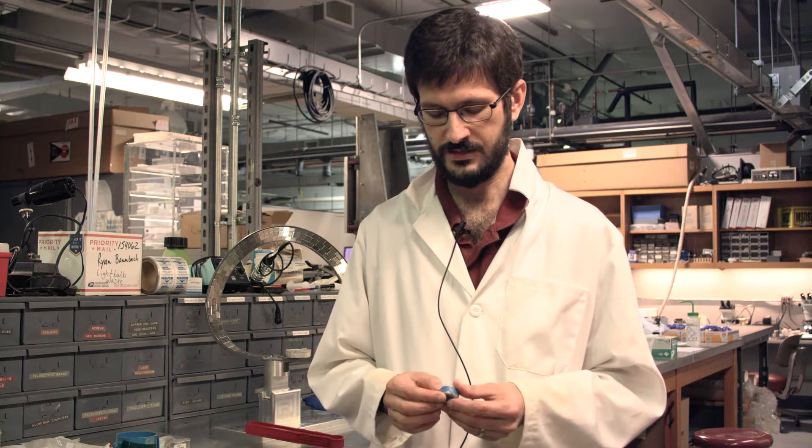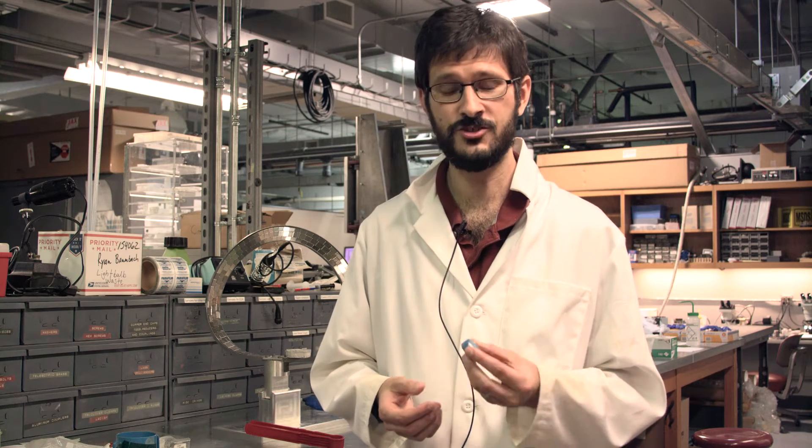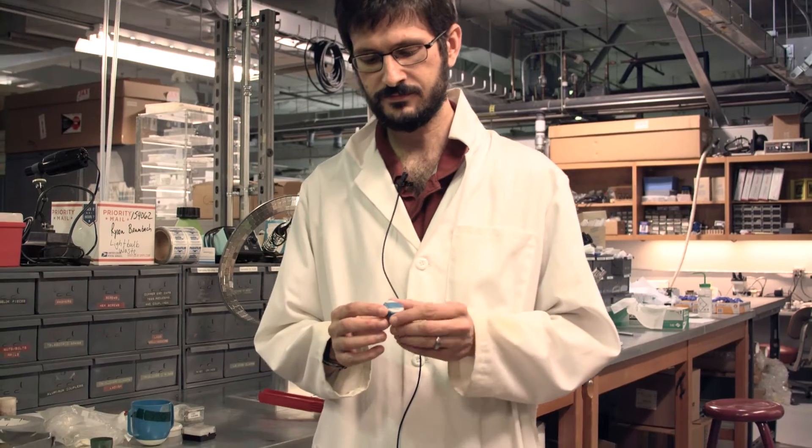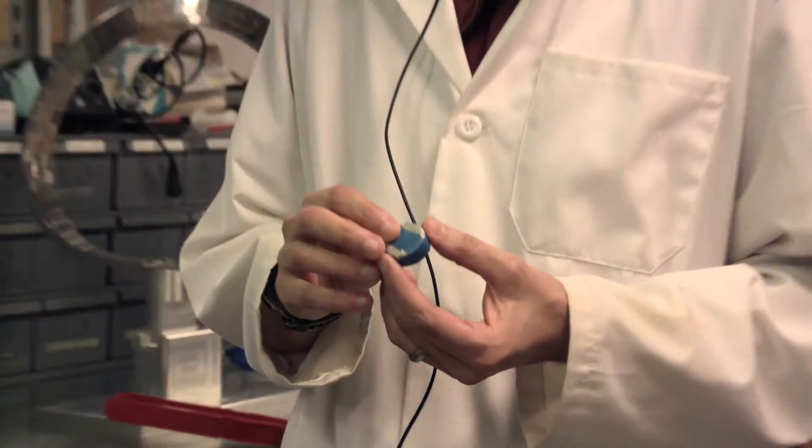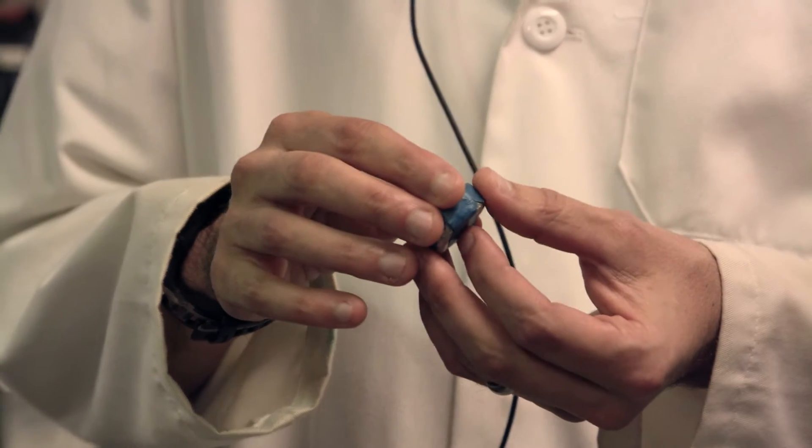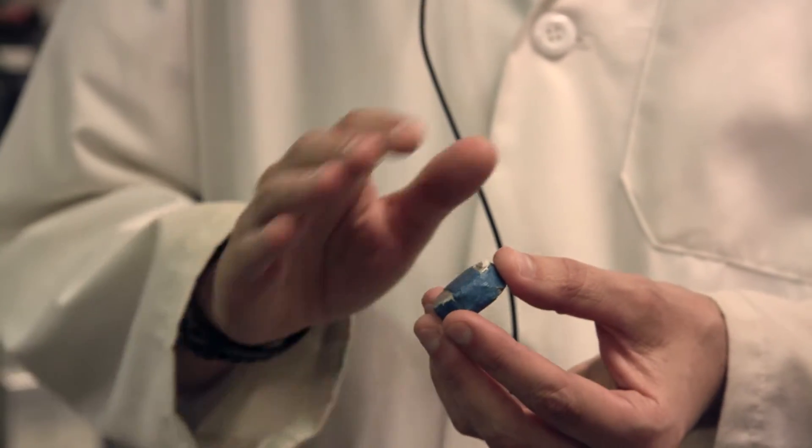So what I want to show you now is a piece of yttrium barium copper oxide. So what's shown here is actually not a pure piece, a simple piece of the material. YBCO is a black crystalline material.